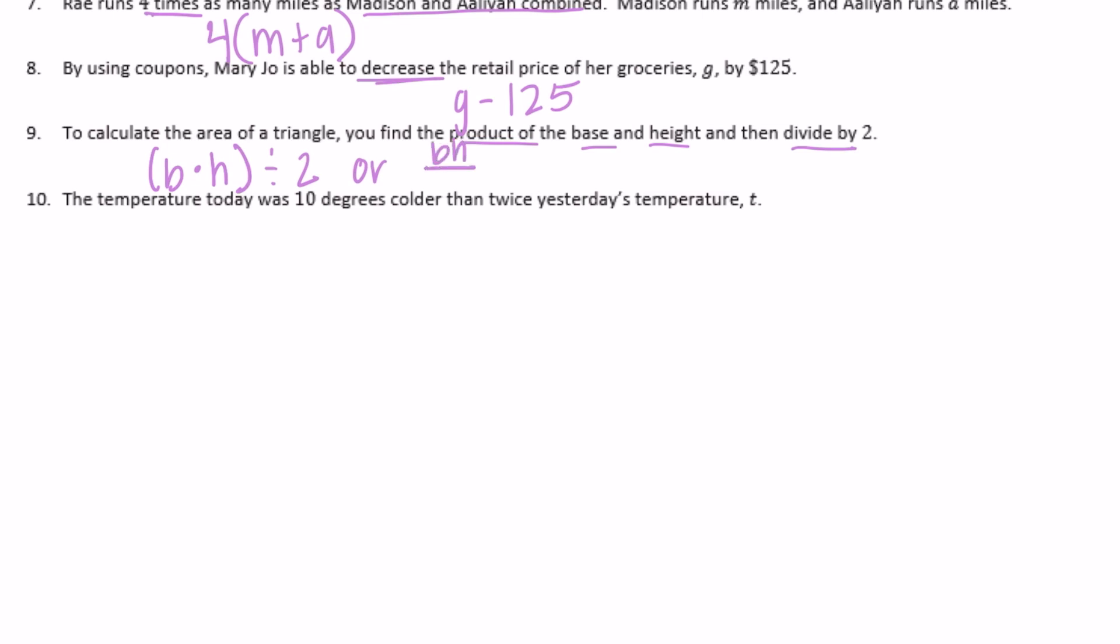You could write it as bh divided by 2. You don't necessarily need the multiplication symbol; you could just do bh ÷ 2. You wouldn't need parentheses either since b and h are already together. Or you could even say half of the base times height: ½bh.